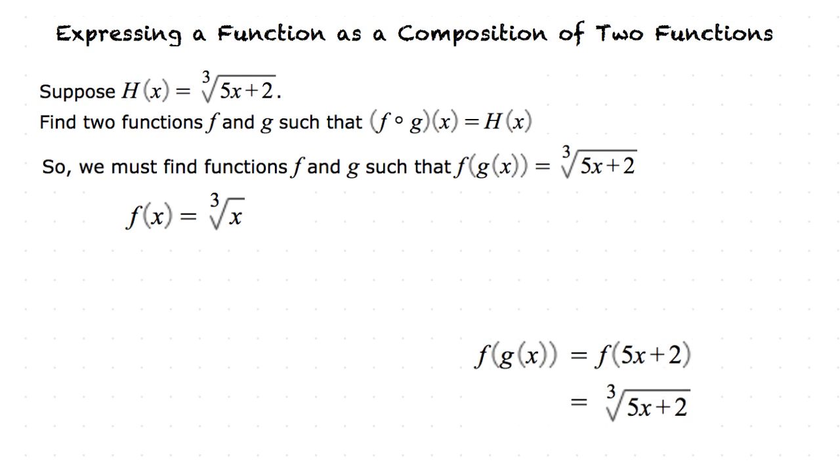Now that we've determined our f of x, we need to figure out what our g of x is going to be. And as we've previously determined, f of x is going to be equal to the cube root of x. So g of x is going to have to equal 5x plus 2. So when we put them together, we end up with the cube root of 5x plus 2.